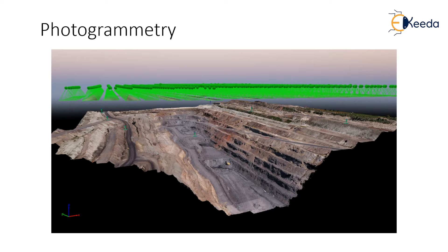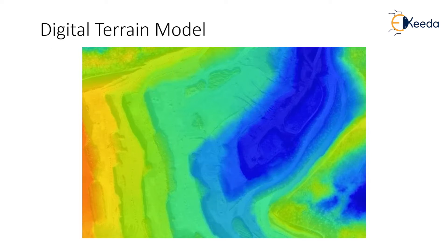Each input image uploaded to photogrammetry software has information about physical objects taken from different vantage points. By combining that information, the software can calculate the exact distances and angles between physical objects and create digital twins, which are either 2D or 3D models. The Digital Terrain Model, or DTM, is one of the most essential datasets for excavation monitoring. The drone platforms are a valuable source of inspection and camera transportation, up to visual line of sight.